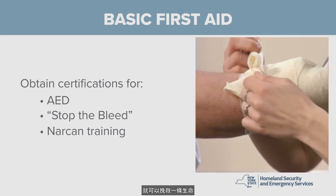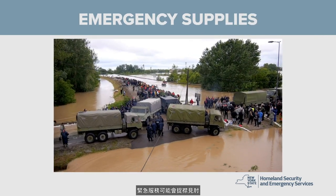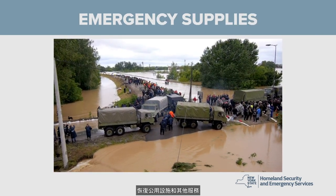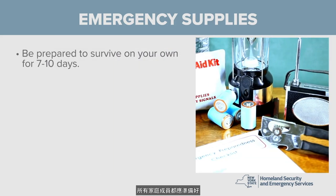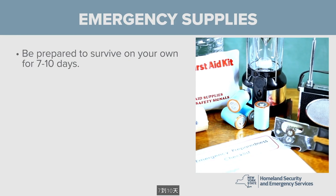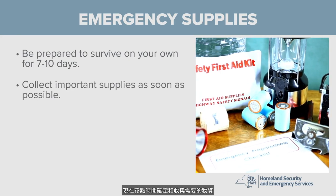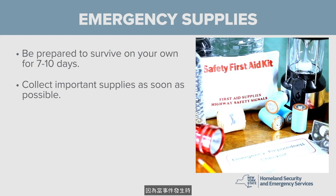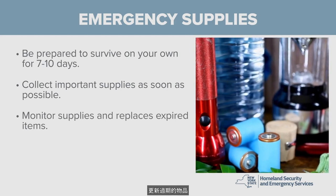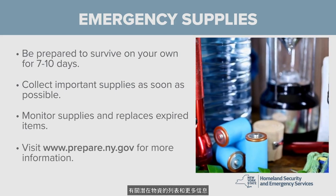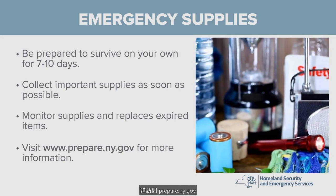In the event of a major emergency, emergency services may be stretched thin, and it could take more time to restore utilities and other services. It is important that all family members be prepared to survive without assistance for 7 to 10 days. Take the time now to identify and collect supplies, because when the event happens, it's already too late. Monitor your supplies and replace items when they expire. For a list of potential supplies and for more information, go to prepare.ny.gov.